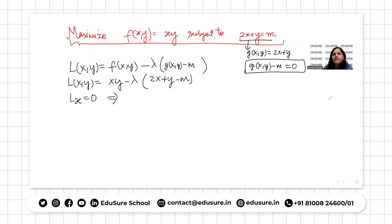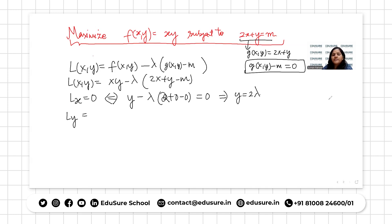Setting Lx equals zero: the partial derivative of xy with respect to x is y, and the partial derivative of lambda(2x plus y minus m) with respect to x is 2 lambda, giving y minus 2 lambda equals zero, so y equals 2 lambda. Setting Ly equals zero: the partial derivative of xy with respect to y is x, and the partial derivative of (2x plus y minus m) with respect to y is 1, giving x minus lambda equals zero, so x equals lambda.